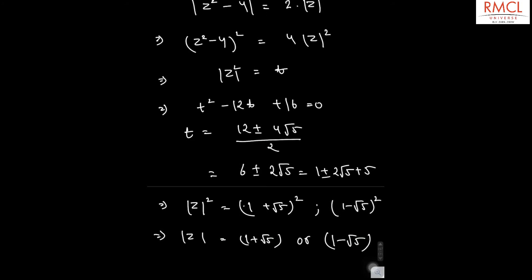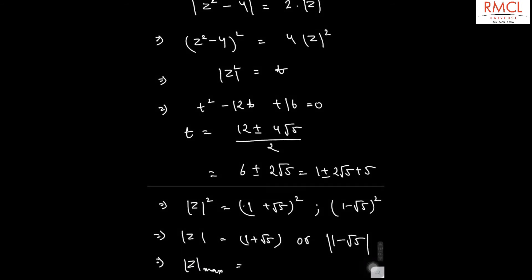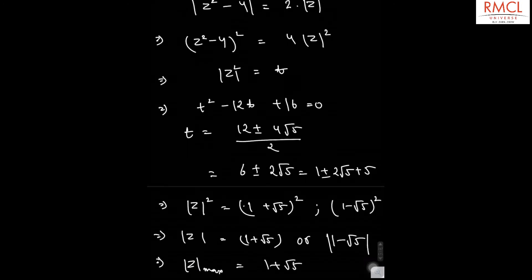And now we know that we have to find the maximum value for mod z. So, maximum value of mod z is equal to 1 plus root 5.